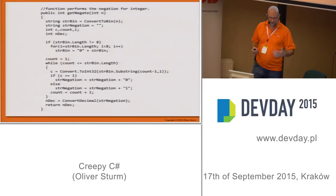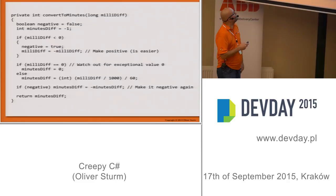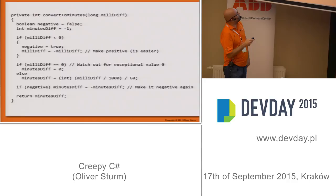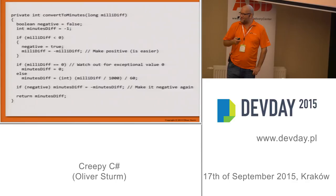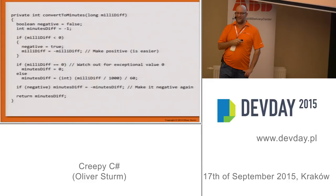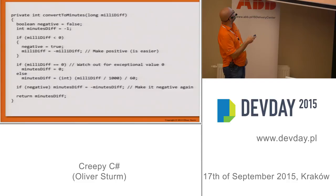Here's another example: converting milliseconds to minutes. First they check if the value is negative and make it positive because it's easier — good thing there are comments, otherwise who'd know. Then they watch out for the exceptional value of zero, though we're not actually dividing by it so it doesn't matter. Then they make it negative again at the end.